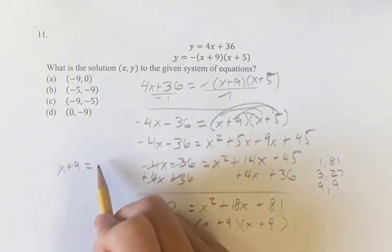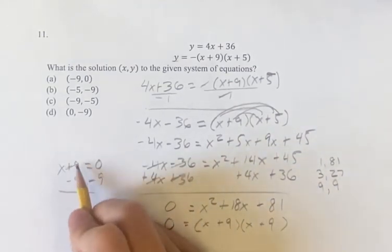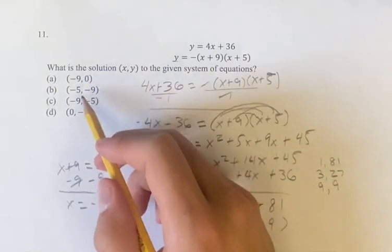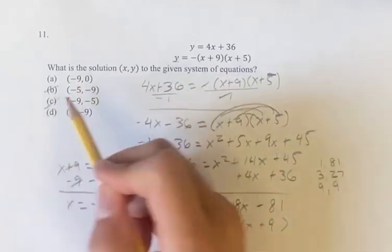So x plus 9 must equal zero. Subtracting 9 from both sides, x is equal to negative 9. So that narrows us down to these two because x is negative 5 and x is zero in those, so those aren't options.